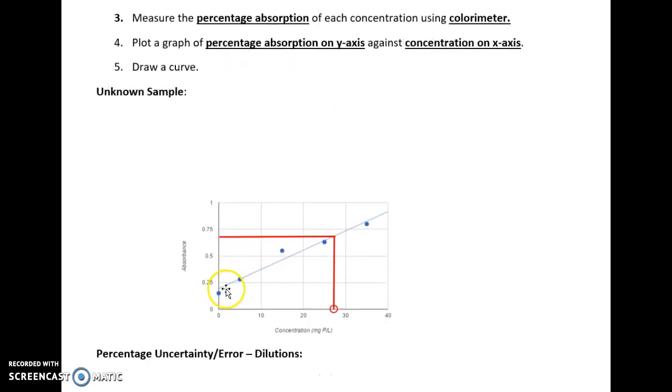So you need to mention what goes where on each axis, and then use your results to draw a curve. So your curve or line will look something like this. Eventually, this might start becoming a curve, and this has absorbance and concentration there.